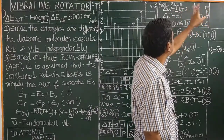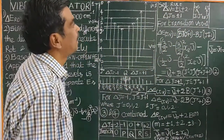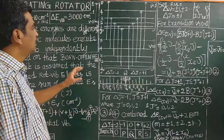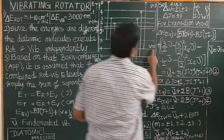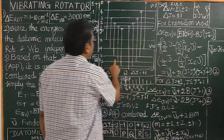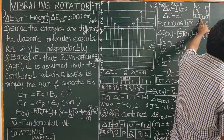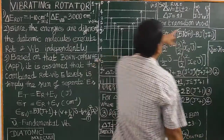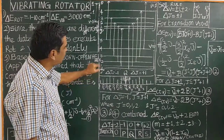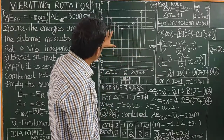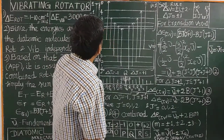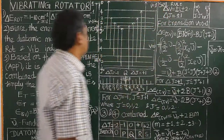The selection rule for rotational energy levels is delta J equals plus or minus 1. For transition from v equal to 0 to v equal to 1, the rotational levels are denoted by J double-prime (the rotational levels for v equal to 0) and J prime (the rotational levels for v equal to 1) by spectroscopic convention.